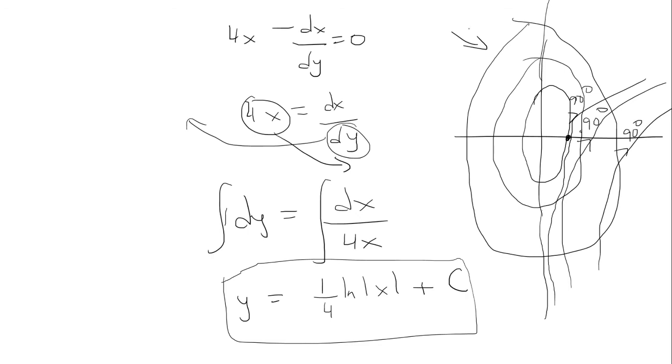This is our ellipse, and these are our orthogonal trajectories. This solves the problem.